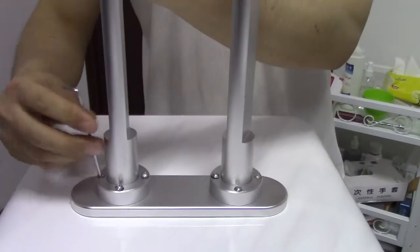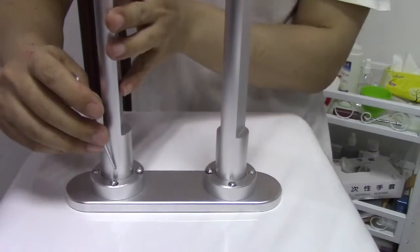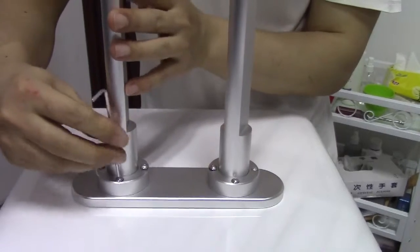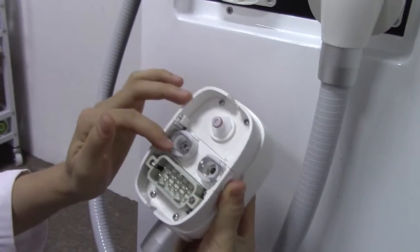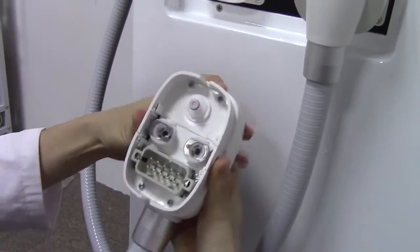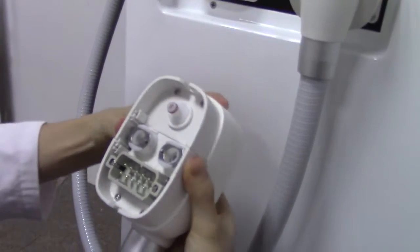Now we install the handle pieces for the machine. Before you install the handle pieces, you have to press these two side buttons.